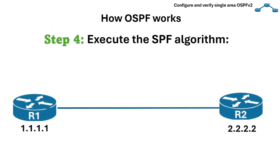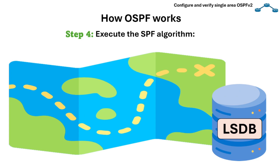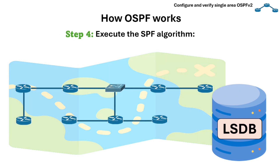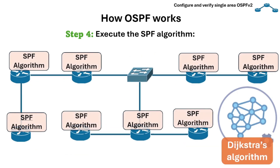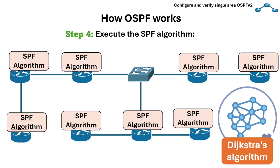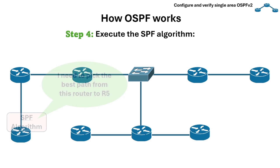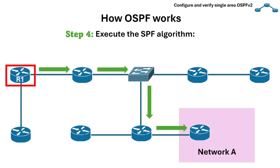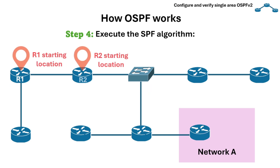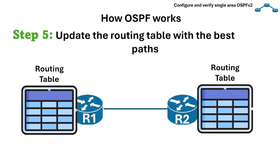After exchanging LSAs and building the topology table, the next step is to execute the SPF algorithm. The link state database is like a map of the whole network — it shows all routers and all links, but it doesn't directly tell a router how to get to a destination. Each router runs the SPF algorithm, also called Dijkstra's algorithm, on the map. The SPF algorithm compares all possible paths and picks the best or shortest route from the router's own point of view. For example, this is the best path from R1 to network A. Once the SPF algorithm finishes, the router takes the best routes it found and installs them into its routing table for actual packet forwarding.